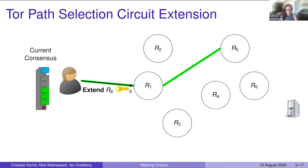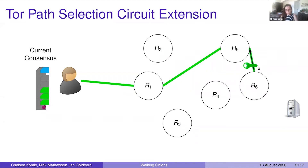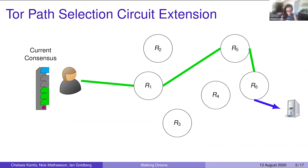Finally, they randomly sample a third relay in order to complete their path and create a circuit, which allows them to forward traffic to the destination server on the other side.